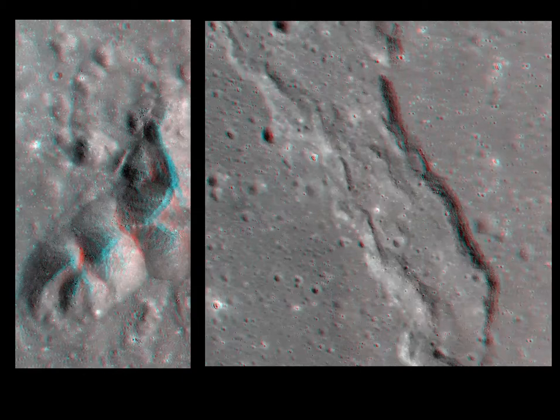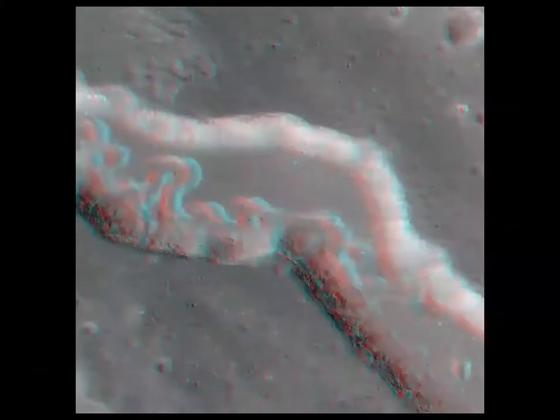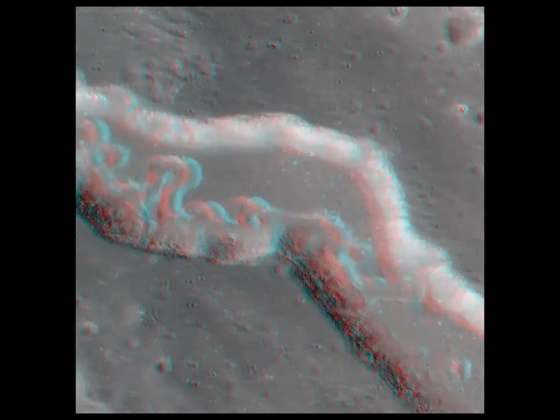In the middle of one of the maria, a wrinkle ridge is where the land around has shrunk as things contracted. The Schröter Valley is the deepest valley on the moon — again probably a collapsed lava tube where lava was flowing in a tunnel underground and then the roof fell in.